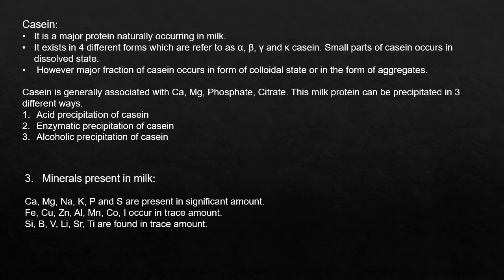Casein is a major protein naturally occurring in milk. It exists in four different forms referred to as alpha, beta, gamma, and kappa casein. Small parts of casein occur in dissolved state, while the major fraction occurs in colloidal state or as aggregates. Casein is generally associated with calcium, magnesium, phosphate, and citrate. It can be precipitated in three ways: acid precipitation, enzymatic precipitation, and alcoholic precipitation, which will be covered in another video.